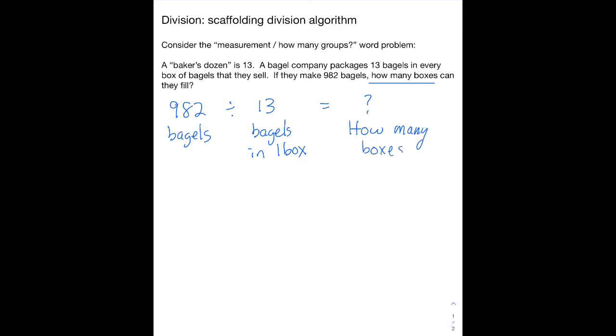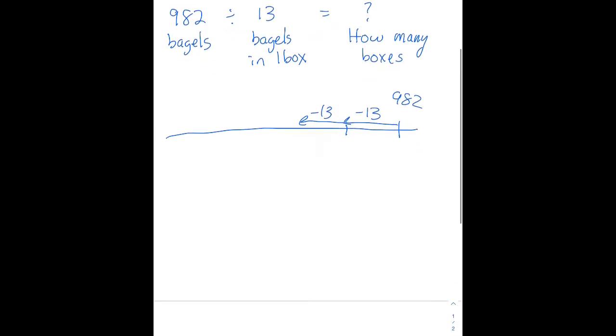If you think about how this would work in the bagel store, we would start with 982 bagels, and we would package up 13, package up another 13, and we could count how many boxes we filled. But that's going to take a long time if we were to subtract 13 at a time. So this algorithm is going to allow us to do larger sets of boxes of our own choosing.